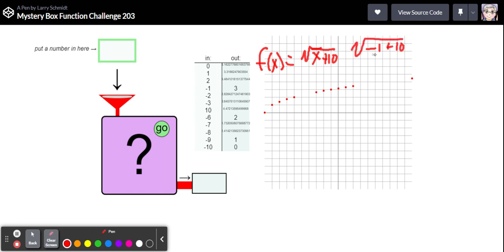Well, negative one plus ten is nine. The square root of nine is three, and that's what we got. And here at negative six, negative six plus ten, square root, that's going to be four, and so that should equal two, and that's exactly what we got there. We got two, so I think we've got this. I think that's our answer.